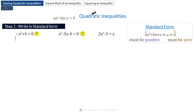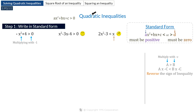Likewise, 2x squared minus 3 is less than x is not in standard form because the right-hand side is not 0. Let's convert these. For minus x squared plus 4 greater than 0, we multiply both sides by minus 1. Multiplying by a negative number reverses the inequality sign, so we get x squared minus 4 is less than 0. This inequality now satisfies both conditions of the standard form.